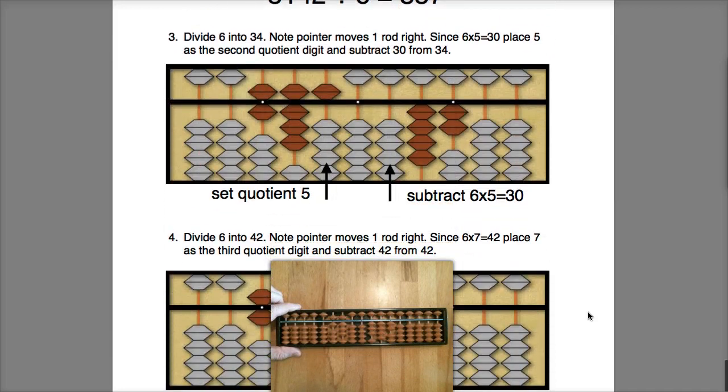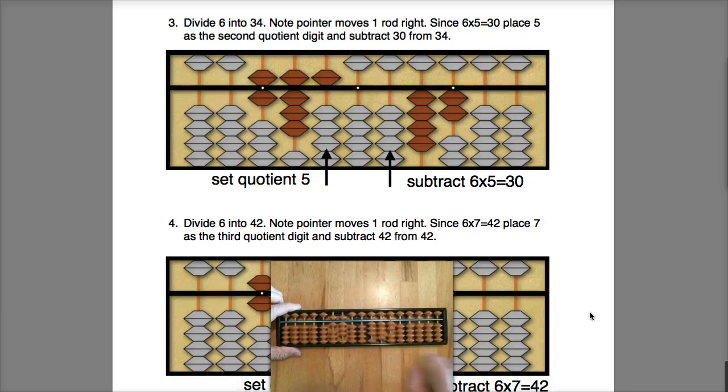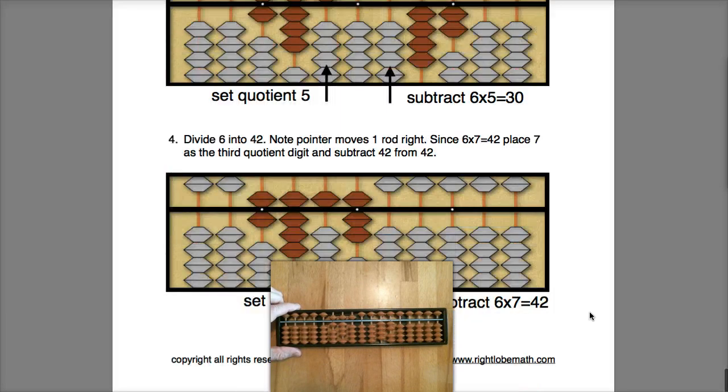Okay, well now we'll continue and we'll divide this time 6 into 34. Okay, well 6 times 5 is 30, so I'll subtract the 30 and now I have a remainder of 42 on the dividend.